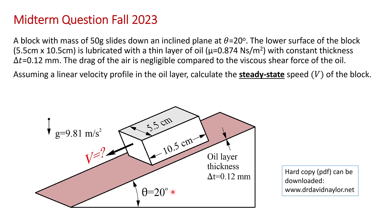The lower surface of the block, which has dimensions of 5.5 by 10.5 centimeters, is lubricated by a thin layer of oil with a dynamic viscosity of 0.874 pascal seconds, and it has constant thickness of 0.12 millimeters.